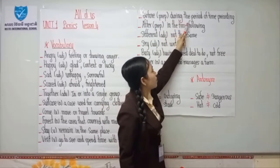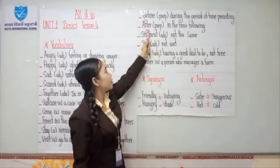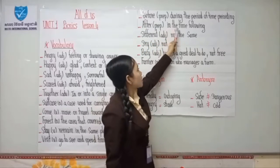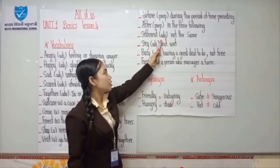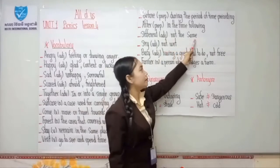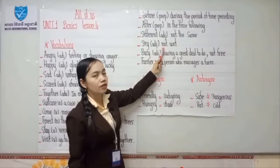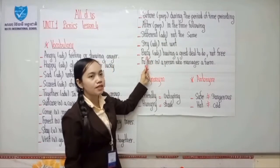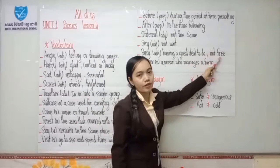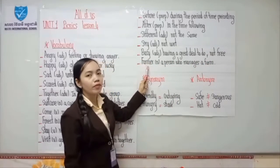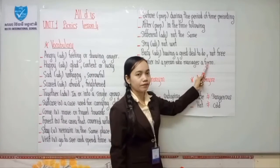Before — preposition, during the period of time preceding. After — preposition, in the time following. Different — adjective, not the same. Dry — adjective, not wet. Busy — adjective, having a great deal to do, not free. Farmer — noun, a person who manages a farm.